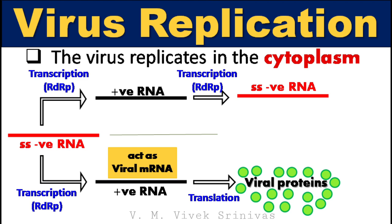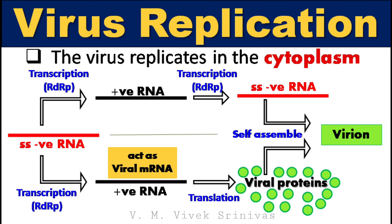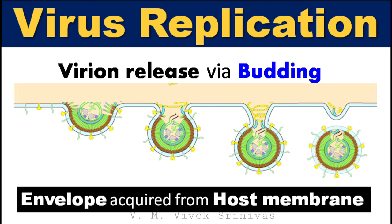Later, the transcribed negative-sense viral RNA and the translated viral proteins self-assemble to form virions. Following assembly, virions are released through budding from the host membrane, during which the virion acquires its lipid envelope.